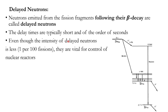Delayed neutrons have very low intensity — about 1 per 100 fissions — but they are vital and essential for the control of nuclear reactors. Since we cannot control the production of prompt neutrons in any way due to their extremely short production time, the delayed neutrons serve this control function.